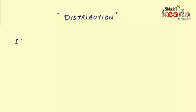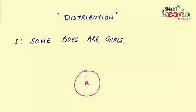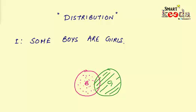Let's now take the third type: the particular affirmative statement, or I-type statement. An example is 'Some boys are girls.' In the Venn diagram, the circle of boys is represented by dots and the circle of girls by lines. You can clearly see that only some part of one class is overlapped by only some part of the other class. This means neither of the classes is being distributed. So keep in mind that in an I-type statement, distribution never occurs.